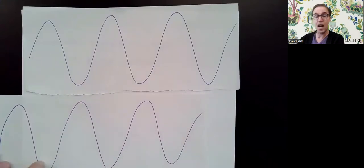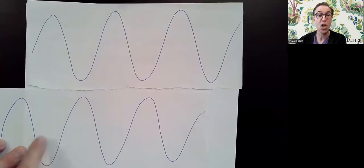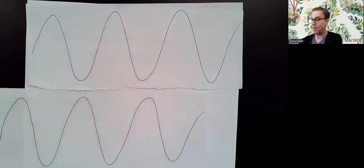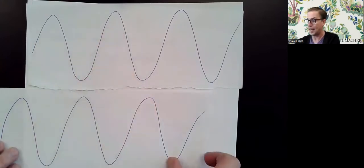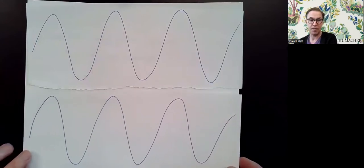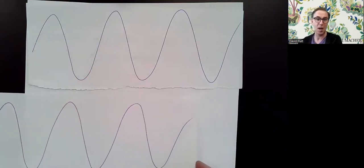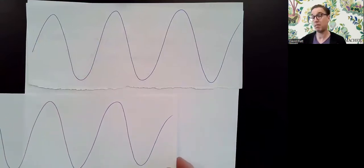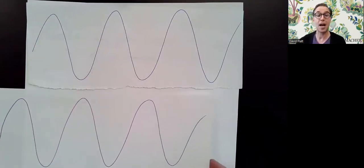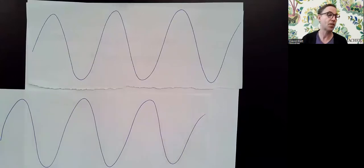If one of the waves got behind because it traveled farther — look, this crest and this trough line up, and this trough and this crest line up. If this wave got behind by exactly half a wavelength, we have what's called destructive interference. But if it got behind by a whole wavelength, we have constructive interference.